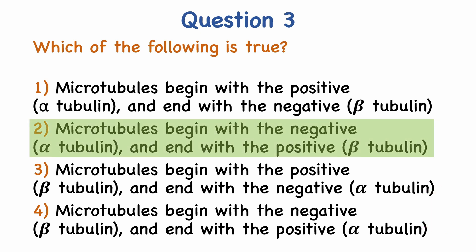The microtubule consists of 13 protofilaments, each of which is composed of alpha-tubulin and beta-tubulin. The microtubules polymerize starting with the negative alpha-tubulin and ending with the positive beta-tubulin.